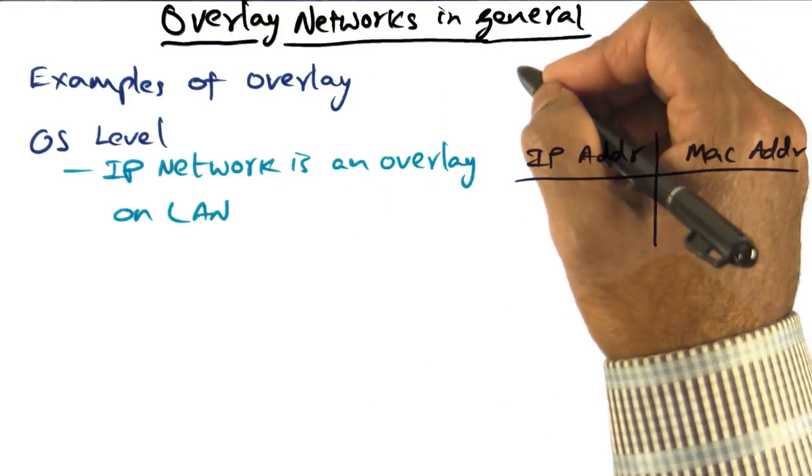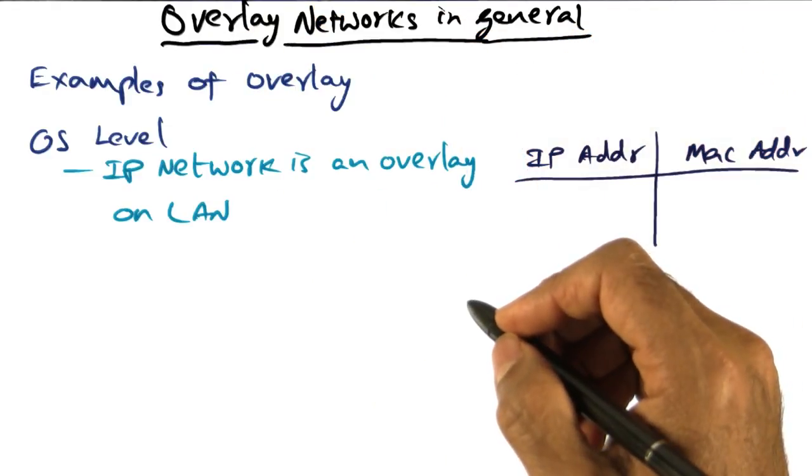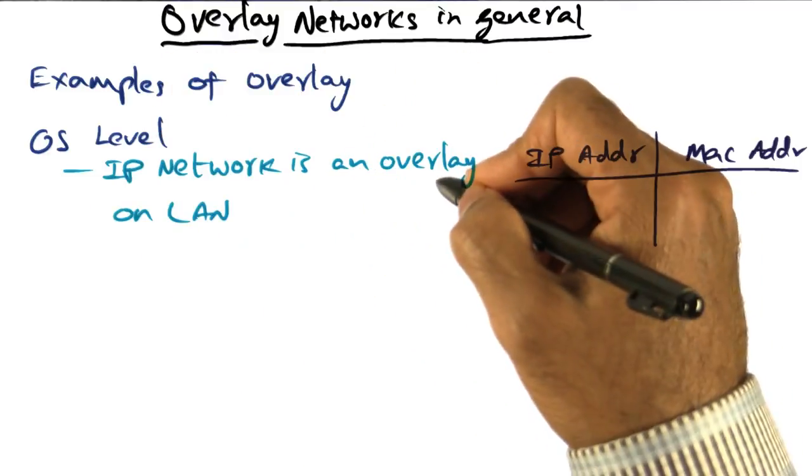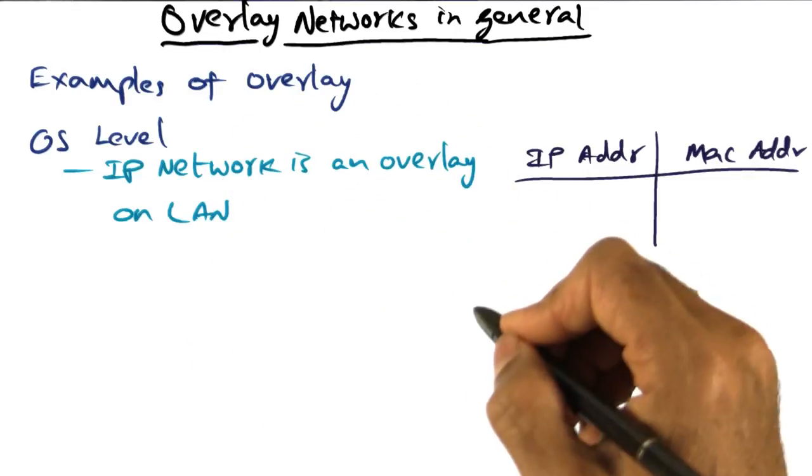Overlay networks is a very general principle. And at the OS level, we already have an overlay network. There is the IP network, which is really an overlay on top of the local area network.